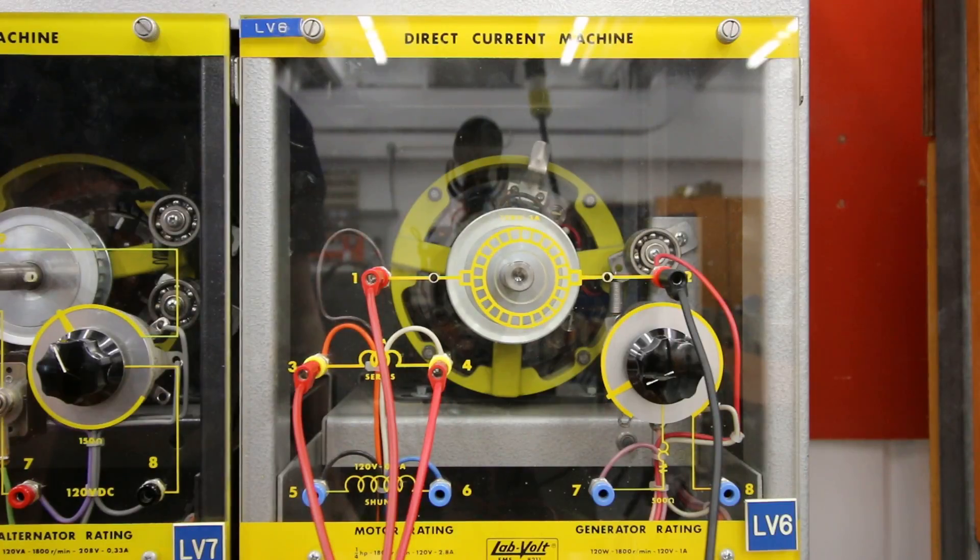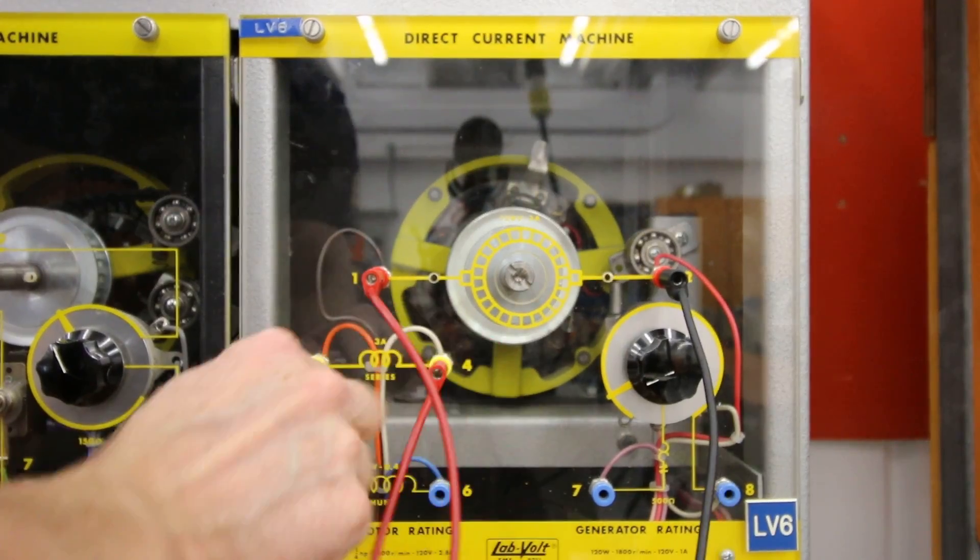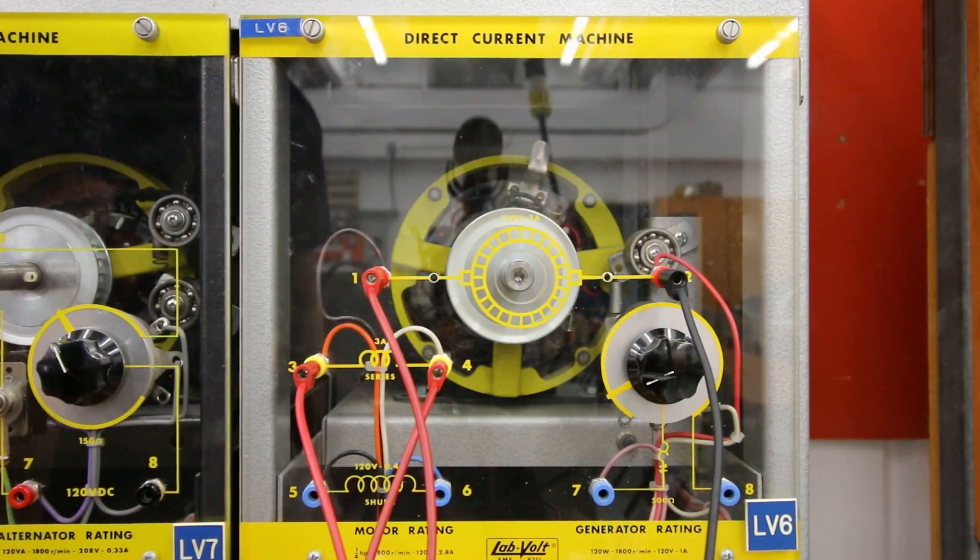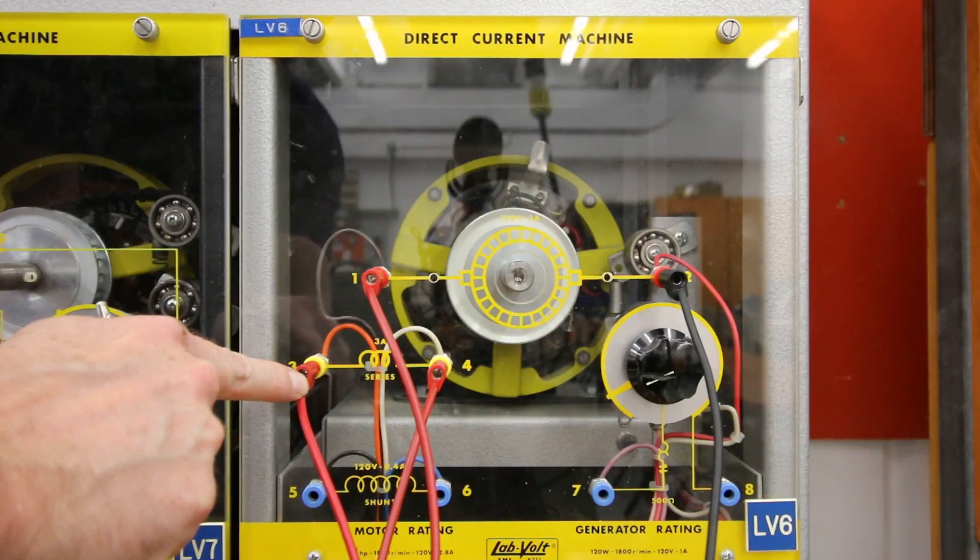In order to change the direction of rotation of the series motor, you can change either the armature or you can change the series. Okay, we're going to keep it like this. Bump it. And you can see that by putting our supply into here, it's going in a clockwise direction.